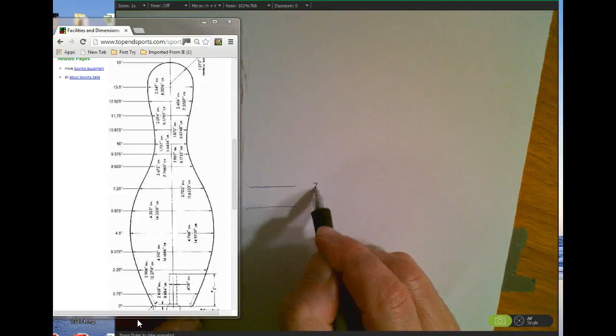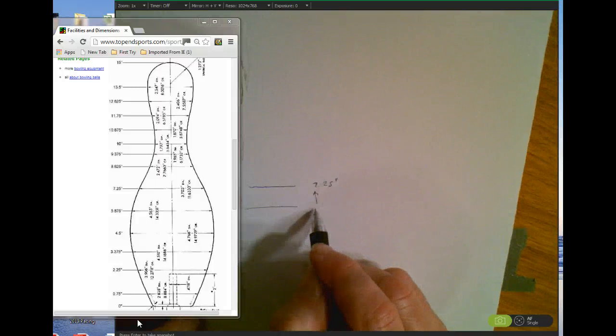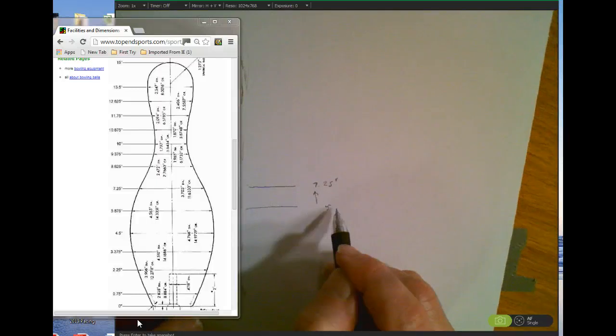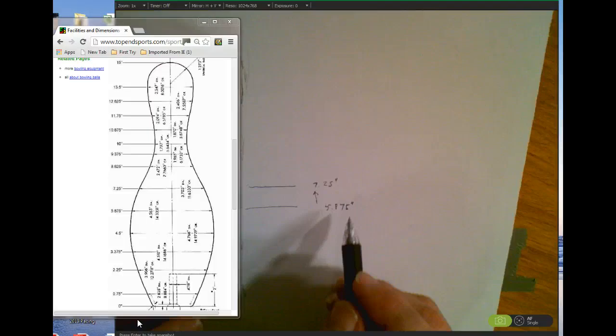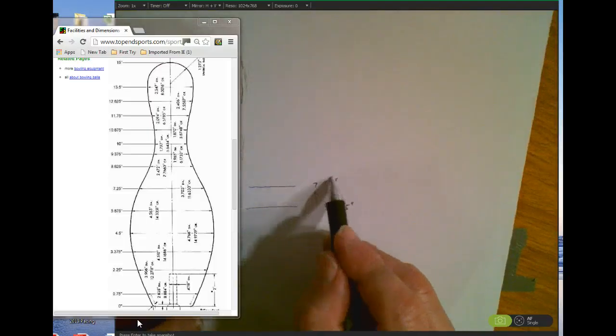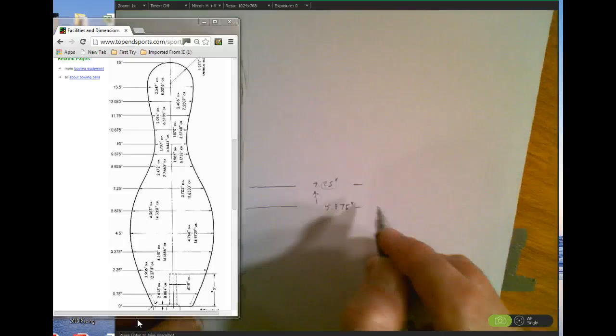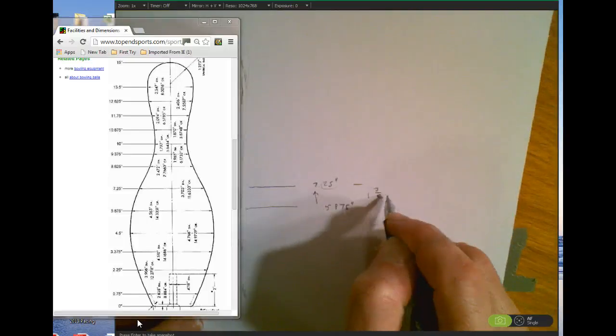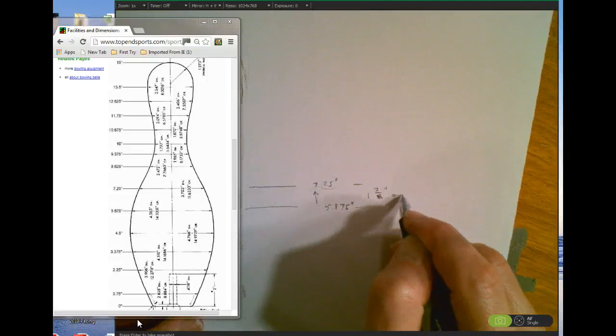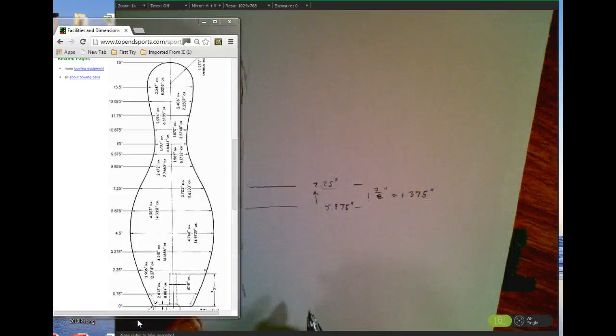I know that this dimension here is from the bottom going up, this is 7.25 inches from the bottom, and then I know this one is 5.875 inches from the bottom. So 8.75 is seven-eighths, that's a quarter, so this number minus this number is 1 and 3/8 inches, or 1.375 inches.